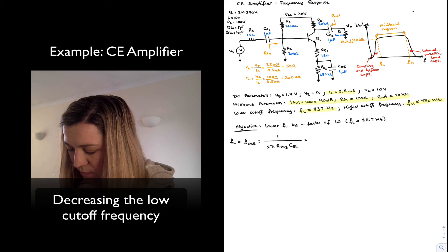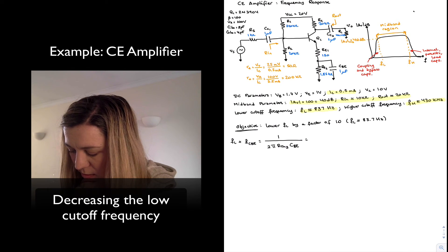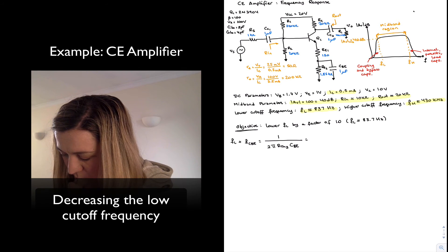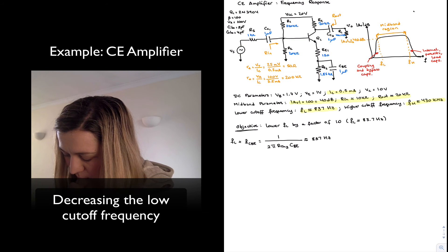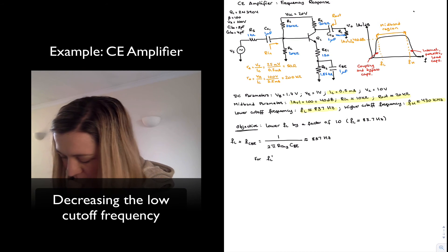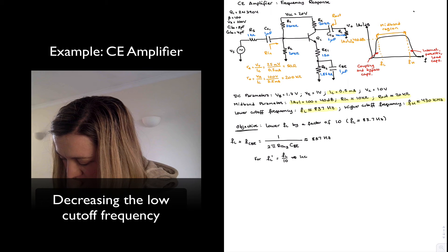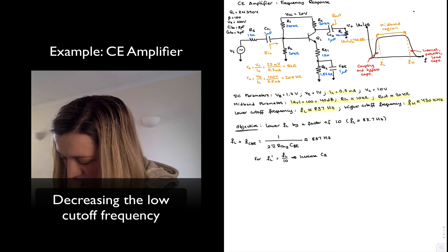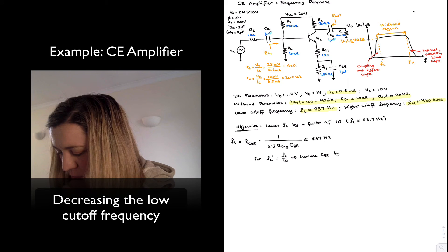And so for CBE, for 837 Hz, or FL prime equal to FL divided by 10, increase CBE by a factor of 10.